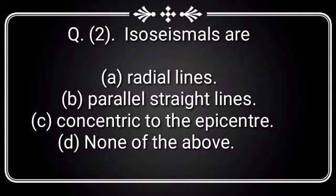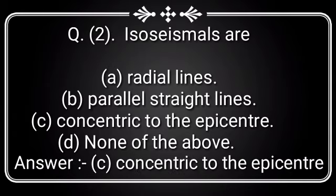Question 2: Isoseismals are — Option A: Gradial Lines, Option B: Parallel Straight Lines, Option C: Concentric to the epicenter, Option D: None of the above. Answer is Option C: Concentric to the epicenter.